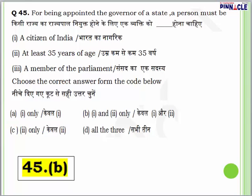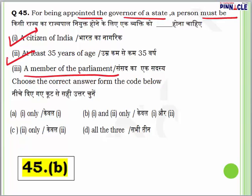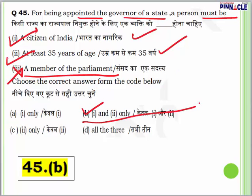Question 45 from polity: For being appointed the governor of a state, a person must be what? He should be a citizen of India, minimum 35 years of age, and a member of parliament. It is not necessary for him to be a member of parliament or a politician — though generally retired politicians are appointed as governors. He should be a citizen of India and 35 years of age. The governor is appointed by the President and is a representative of the President. Answer is B — only conditions 1 and 2 are correct.